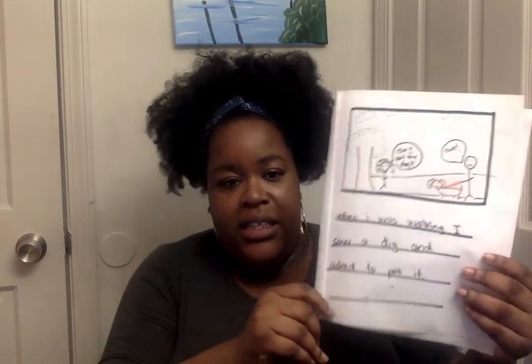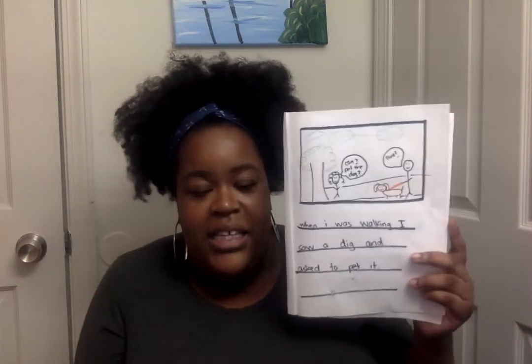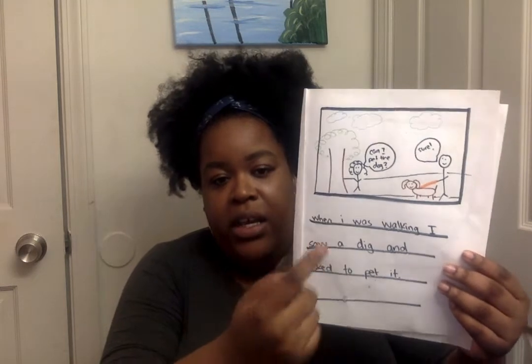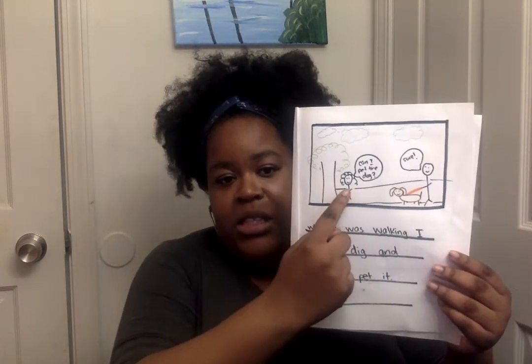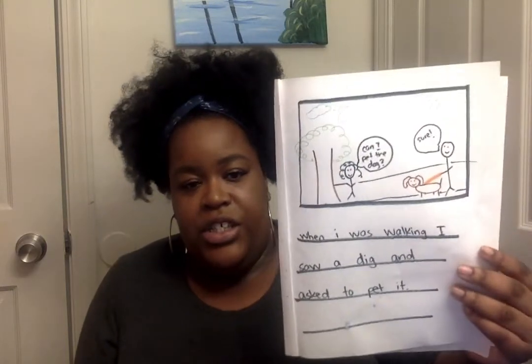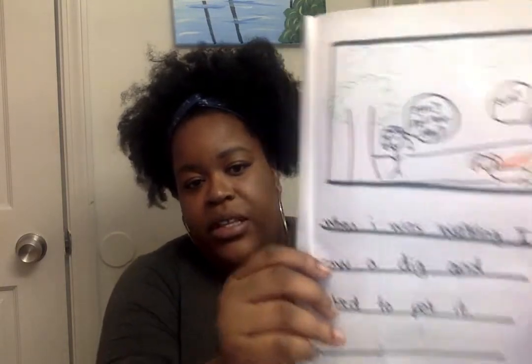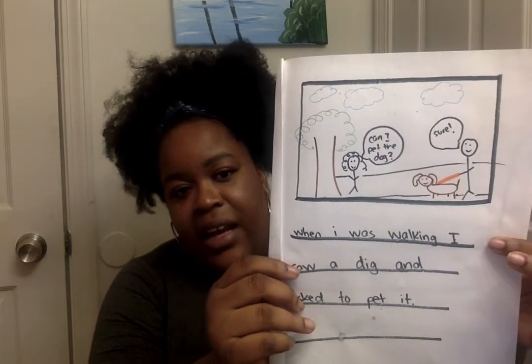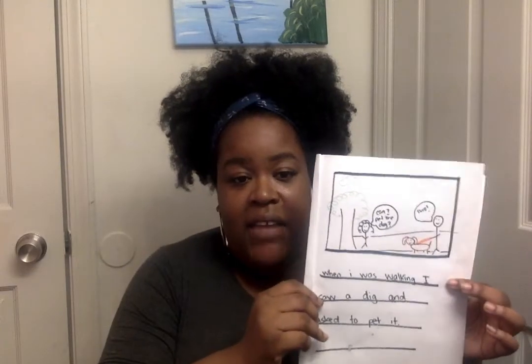Let's go to page number two and see what happened in the middle of my story. It says: when I was walking, I saw a dog and I asked if I could pet it. I tried my best to draw what I remember — there was a tree outside, that was me, that was the person, we're six feet apart, and there's the dog. I even added speech bubbles: I said 'can I pet the dog?' and the person said 'sure.'